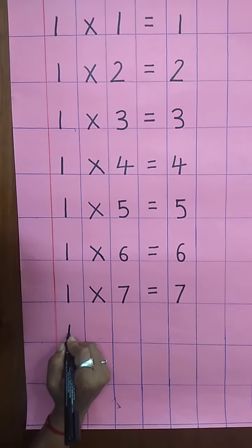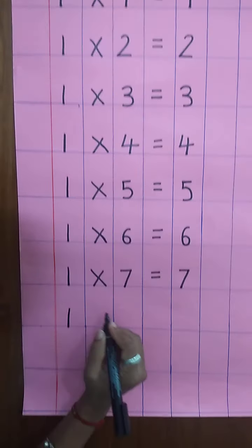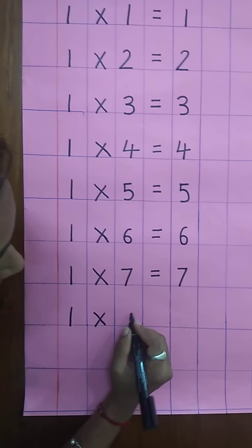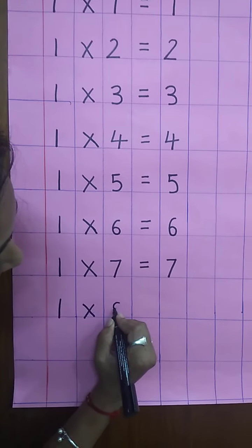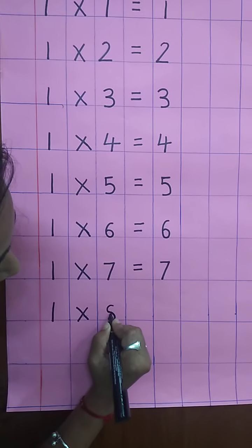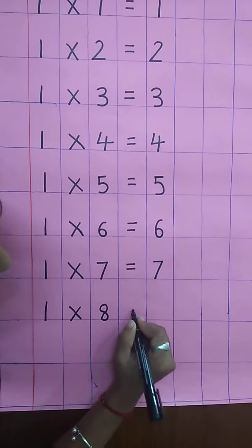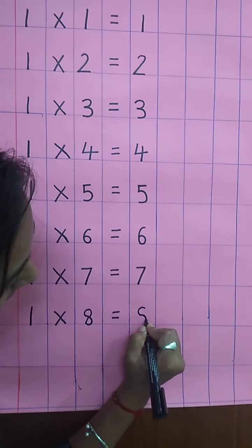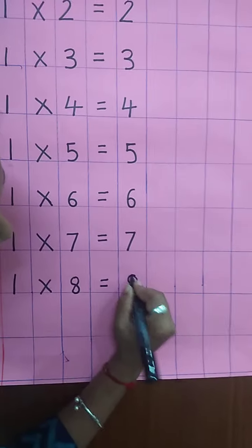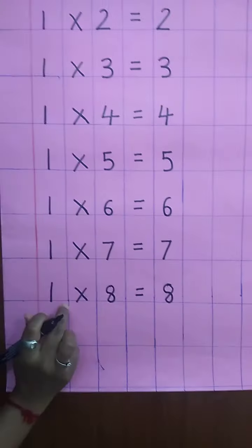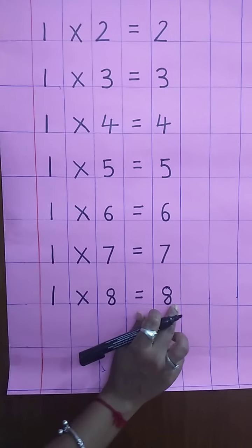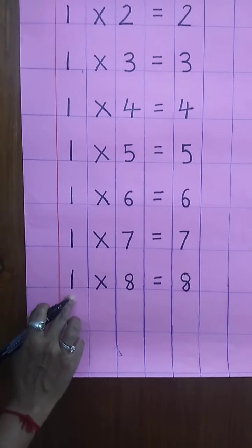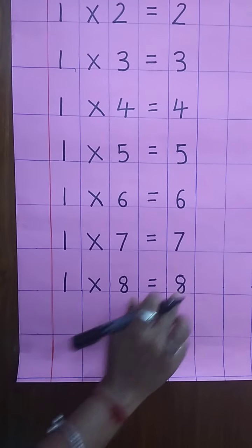You have to write. One, multiplying sign. Write down eight. Equal sign. Again, write down eight. One eight's are eight. Speak and write. One eight's are eight.